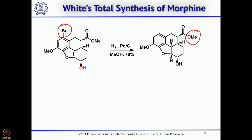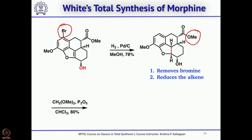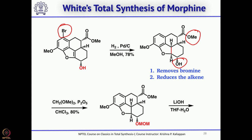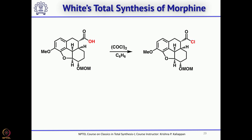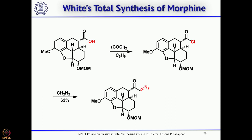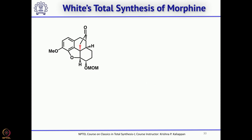For the fifth ring, White used an intramolecular carbenoid C-H insertion as the key reaction. You hydrolyze the ester to carboxylic acid and convert it to a diazoketone. First, protect the free hydroxyl group as a MOM ether, then hydrolyze the ester to carboxylic acid. Convert the carboxylic acid to the acid chloride using oxalyl chloride, then treat with diazomethane to get the diazoketone. Treating with dirhodium tetraacetate forms the rhodium carbenoid, which undergoes insertion at this C-H bond to give the pentacyclic compound directly.